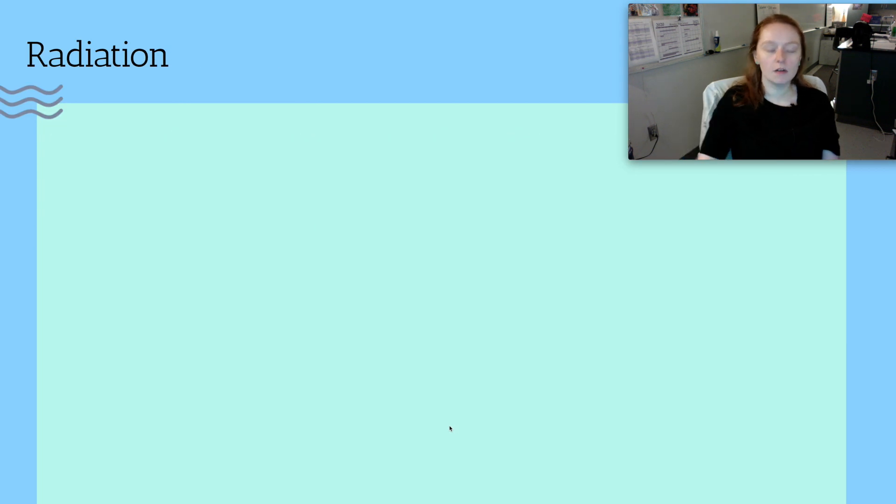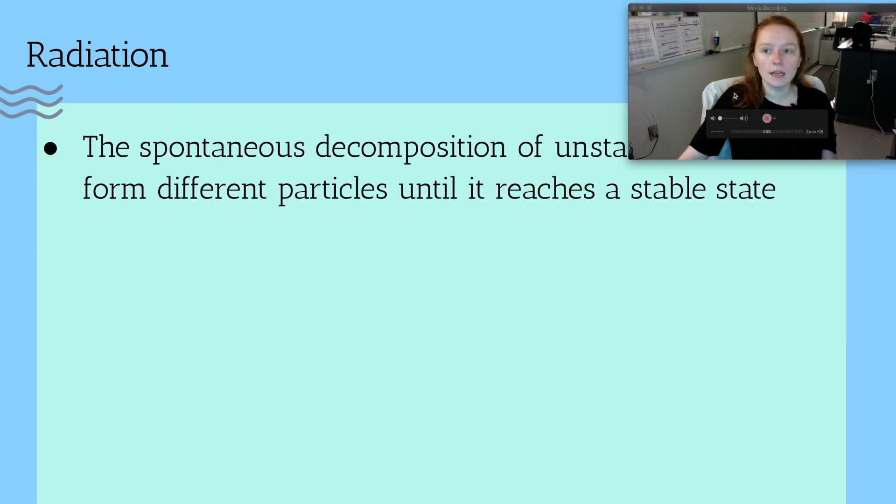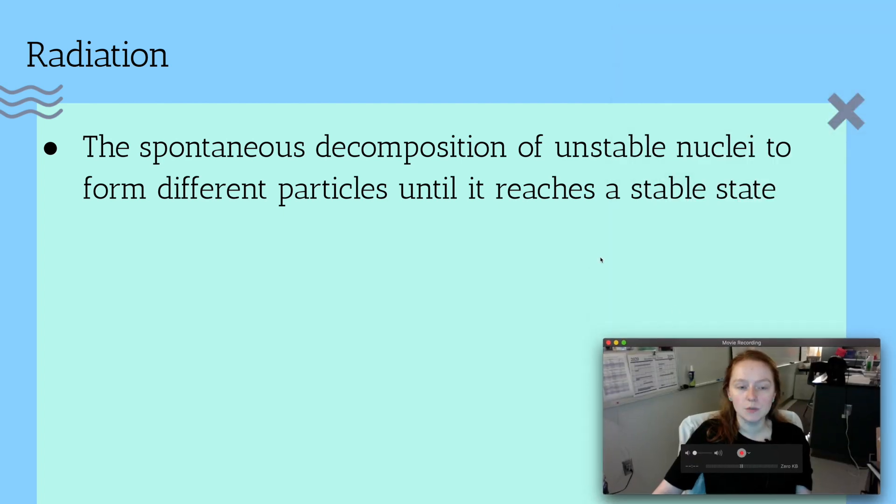So the first thing that we're going to talk about is just what radiation is. And radiation is the spontaneous, which means random, it can't be foreseen, decomposition of unstable nuclei to form different particles until it reaches a stable state.